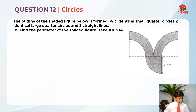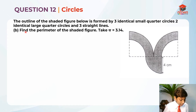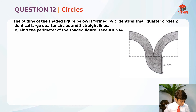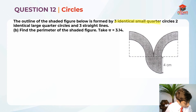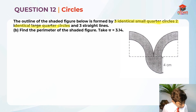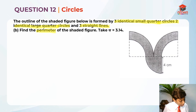Let's take a look at part B and read it first. Find the perimeter of the shaded figure. Take pi equals 3.14. So there are three identical small quarter circles, two identical large quarter circles, and three straight lines. They are asking us to find the perimeter of the shaded figure, taking pi equal to 3.14.